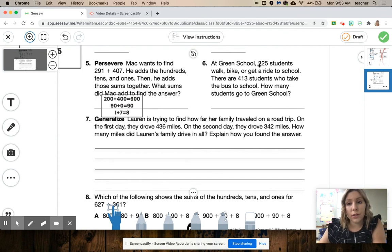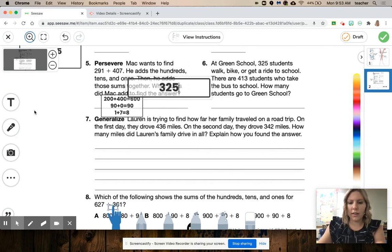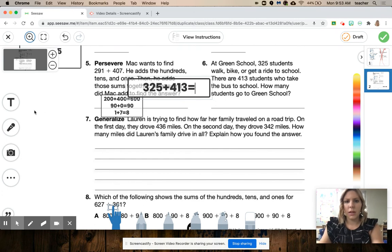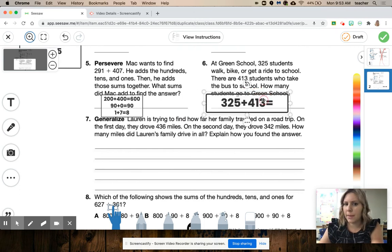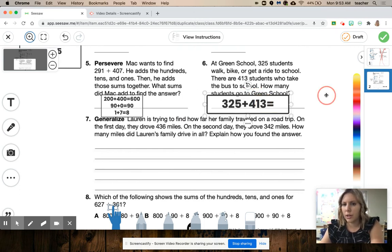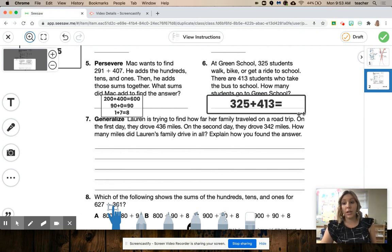At Green School, 325 students walk, bike, or get a ride to school. There are 413 students who take the school bus. How many students go to Green School? So 325 of them walk, bike, or ride plus 413 that ride the bus. 325 plus 413. You do not have to do the expanded algorithm for this one if you do not need to. But I also don't want you just popping out a calculator, even though I know we all have one on our computer and on our cell phones, okay? Working hard.